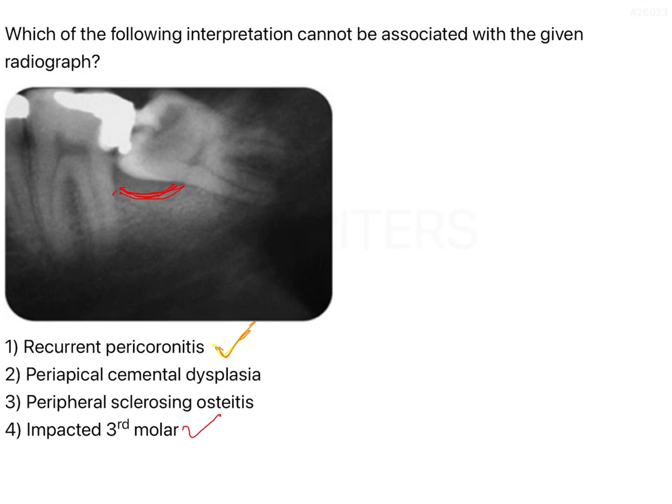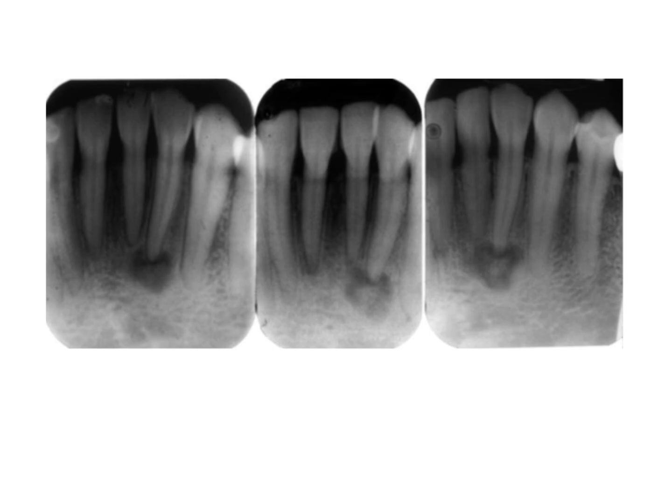In this case, pericoronitis leads to pocket formation, and if the patient has a good immune system, dense bone formation — condensing osteitis — can occur. On the other hand, periapical cemental dysplasia is very commonly found in the mandibular anterior region, primarily the mandibular incisors.